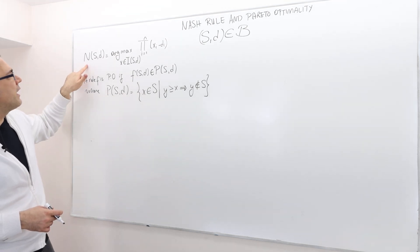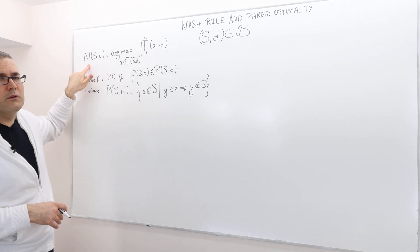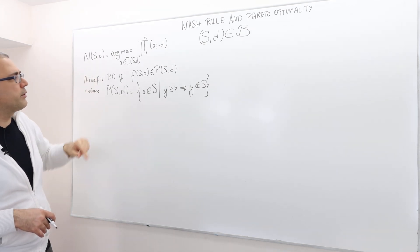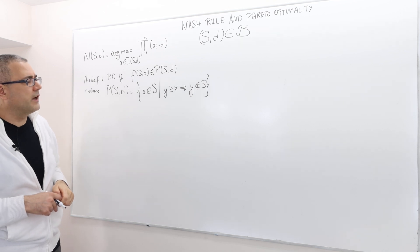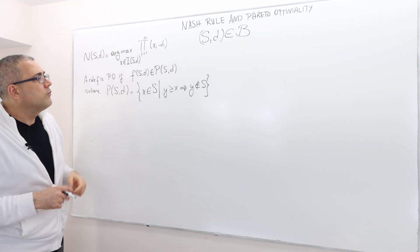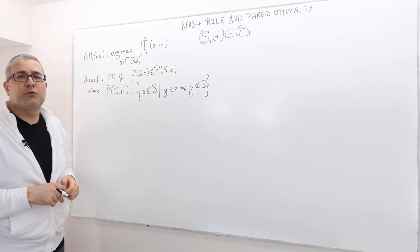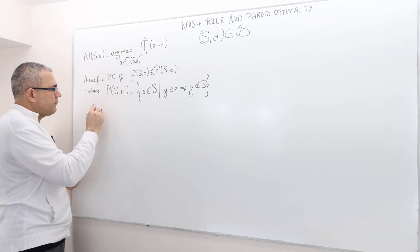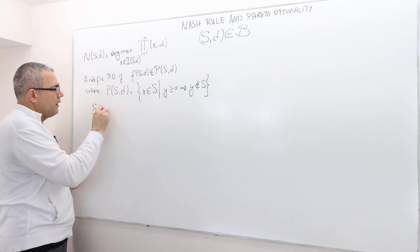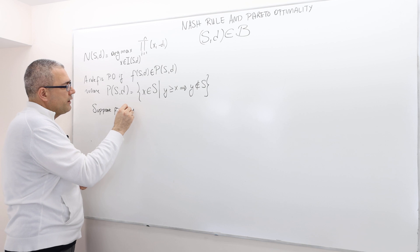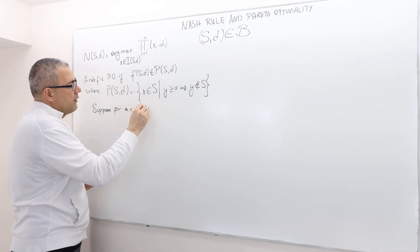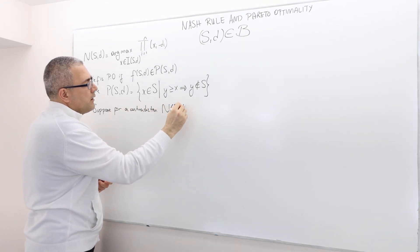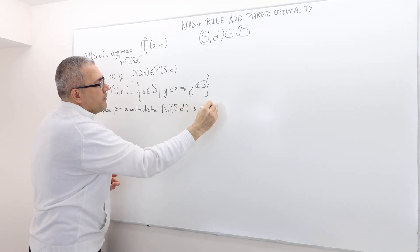We're going to show that the Nash rule actually satisfies proto-optimality. Probably the easiest way is to prove by contradiction. Suppose for a contradiction the Nash rule is not proto-optimal.